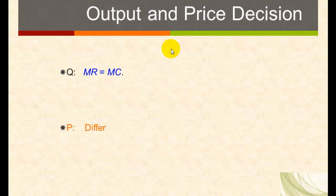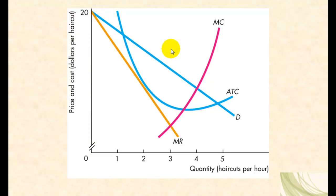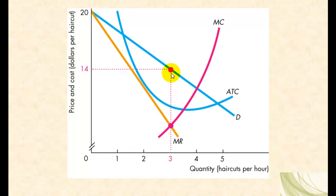However, prices differ across these industries. For a firm in a monopolistically competitive industry or a monopoly, the equilibrium quantity is determined by where marginal revenue equals marginal cost — in this case the equilibrium quantity is three. Price is then determined by where this quantity hits the demand function, which is the maximum consumers are willing to pay. In this case, equilibrium price is 14.